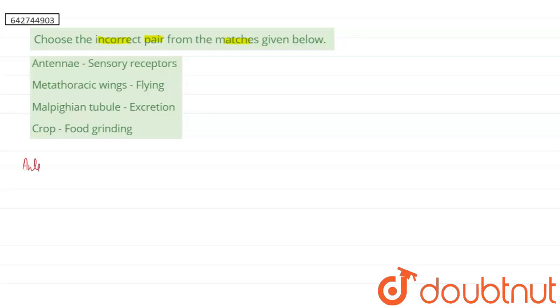If you are talking about our first option, the antennae in the cockroach, the antennae of the cockroach are basically sensory receptors. They generally have the tactile receptors in them.